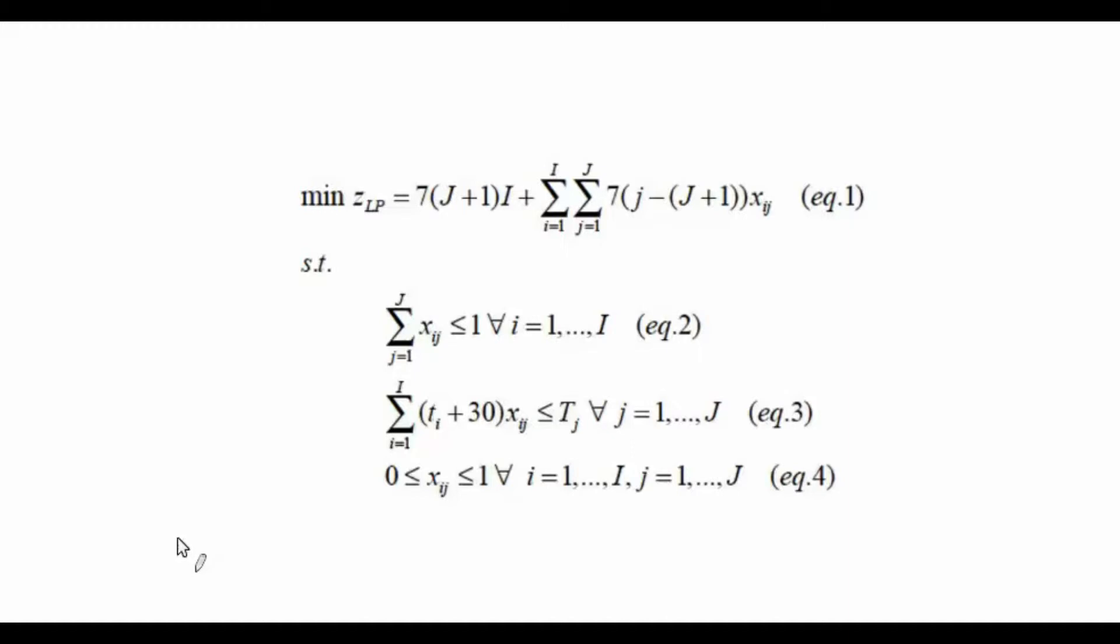The problem says let's denote the optimal objective function value for the integer program as Z star IP.